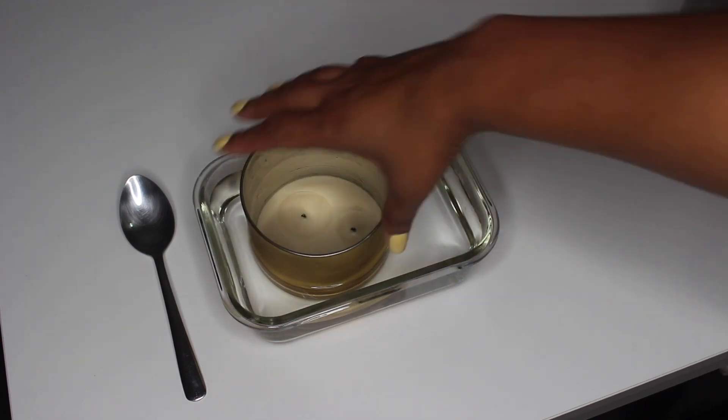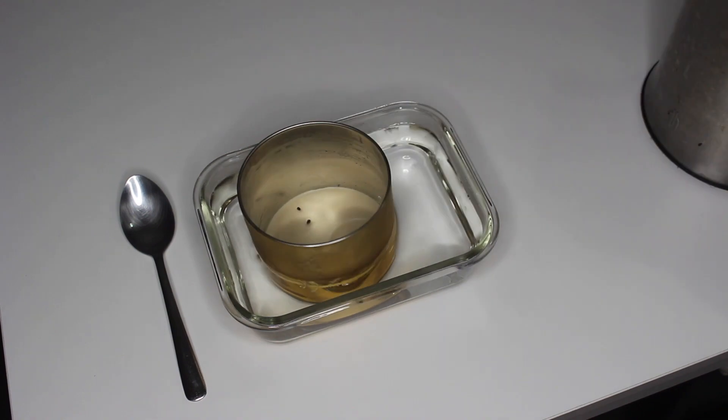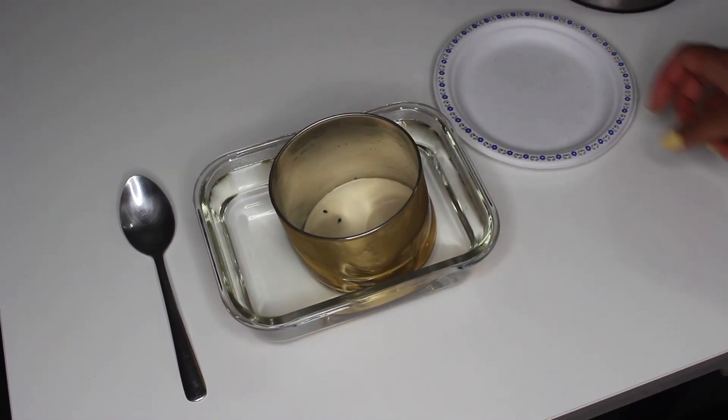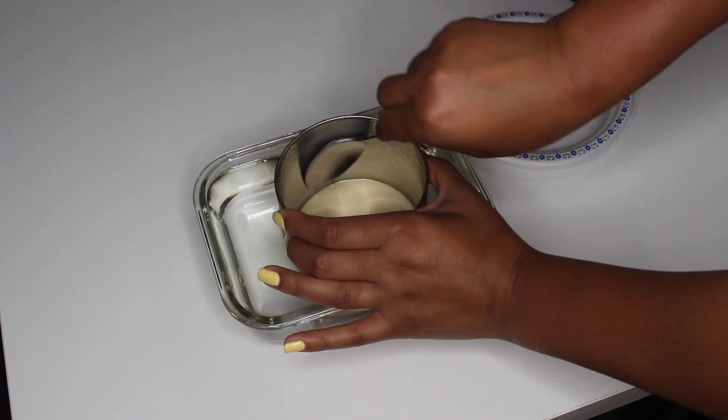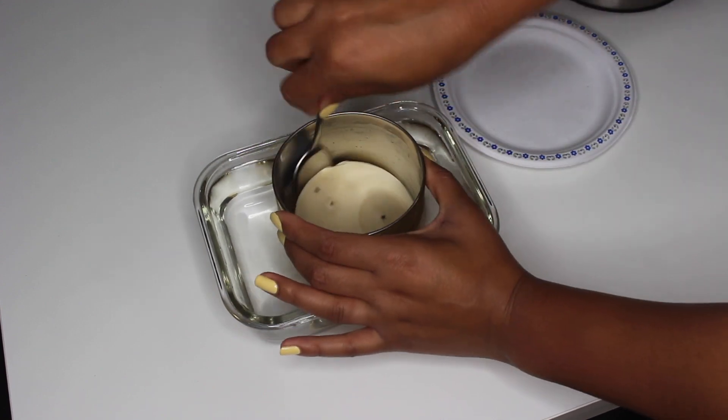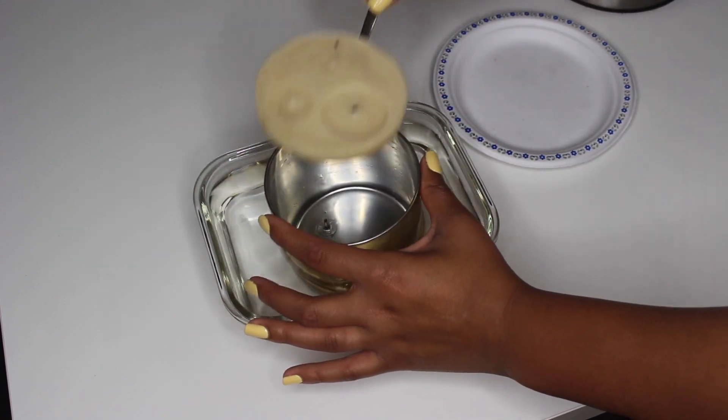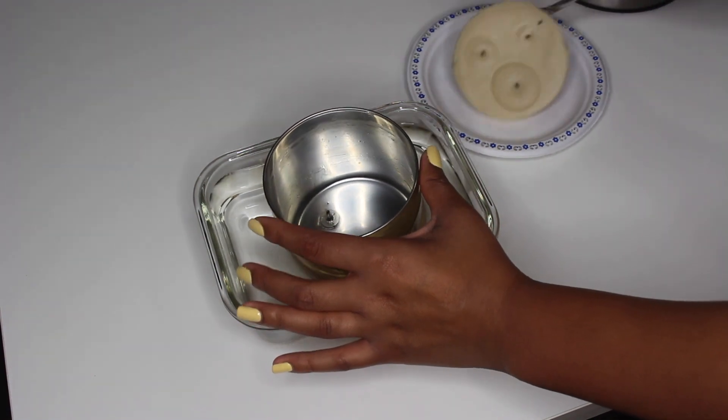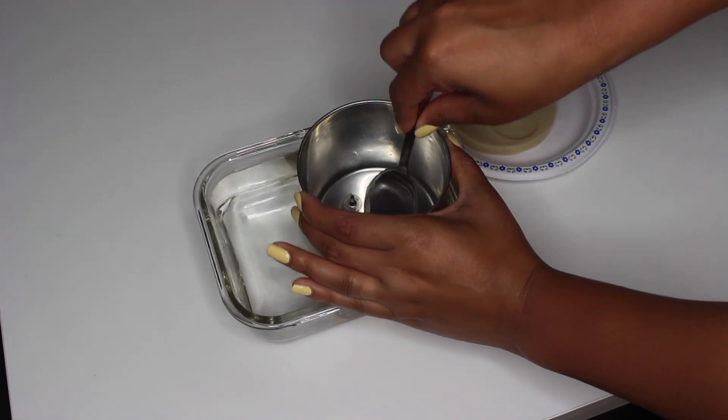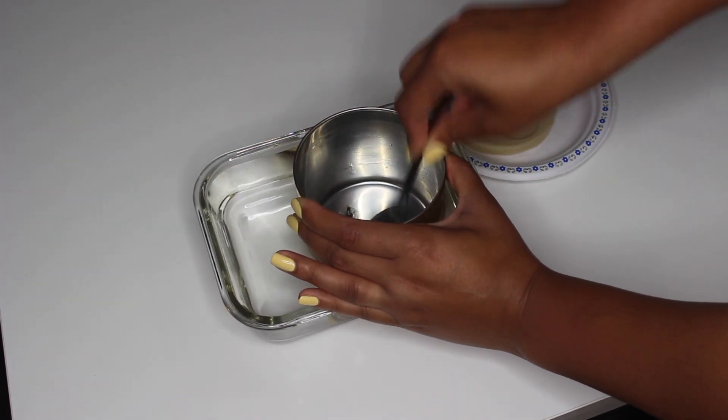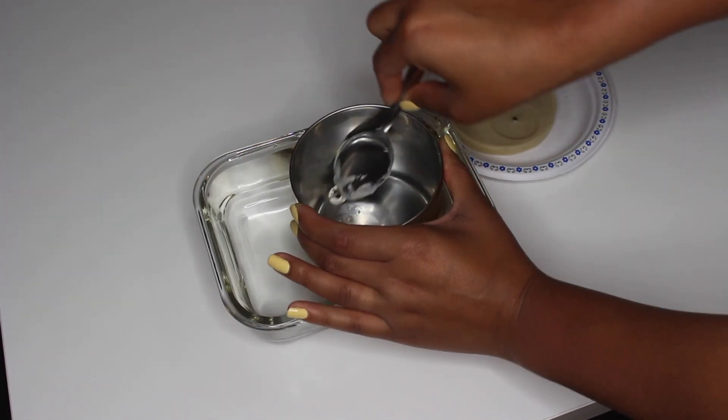After your candle jar has been in the hot water for approximately two to three minutes, you want to go ahead and use your metal spoon to pop that wax at the bottom by pressing the metal spoon against the edge of the jar, and it should come out in one piece. If you find that some of the wicks are still stuck to the bottom of the jar, just use your spoon to wiggle those loose and they should pop off easily as well.